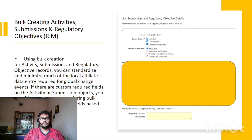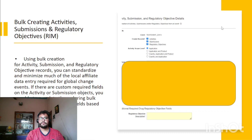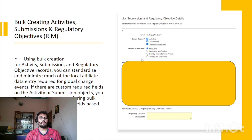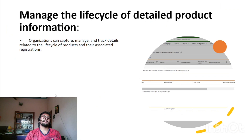As shown in the screenshot, from the test event page you can create records like activity, submission, and regulatory objective, and link them with an application. This minimizes your effort and allows you to create all necessary records from the event object.